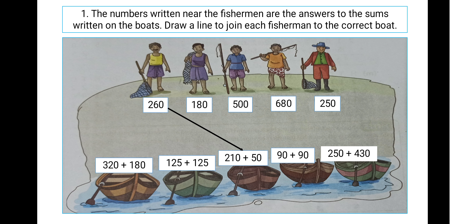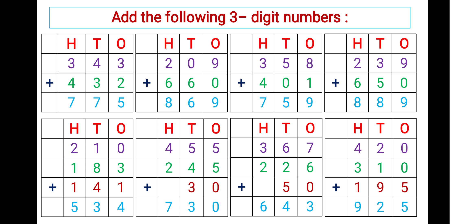Now come to the next slide where we learn three-digit number addition. In our previous class, Class 2, we learned three-digit number addition. Here it is three-digit numbers. We can see the three-digit number divided into three sections. We start from 1's, then 10's, then 100's. We can see in our picture.